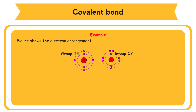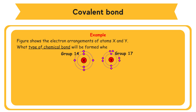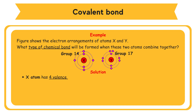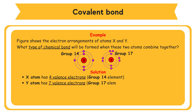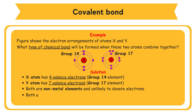The figure shows the electron arrangements of atoms X and Y. What type of chemical bond will be formed when these two atoms combine? Solution: Atom X has four valence electrons, so it is a Group 14 element. Atom Y has seven valence electrons, so it is a Group 17 element. Both atoms X and Y are non-metal elements and are unlikely to donate electrons.